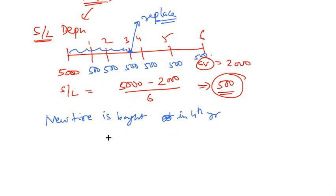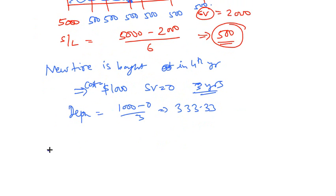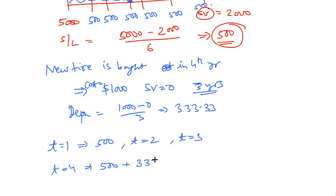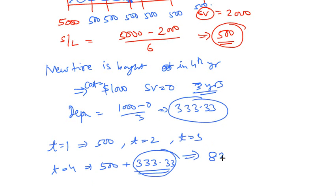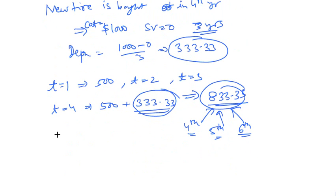The new tire costs $1,000, salvage value zero, life three years, so depreciation = $1,000 ÷ 3 = $333.33 per year. Under straight-line depreciation: at t=1, 2, 3 you depreciate $500. But at t=4 you must add the additional $333.33 for the new tire, so depreciation shoots up to $833.33. This same $833.33 applies in year five and year six as well.